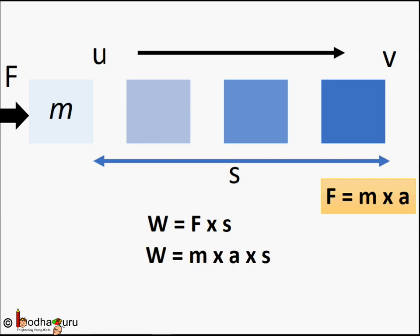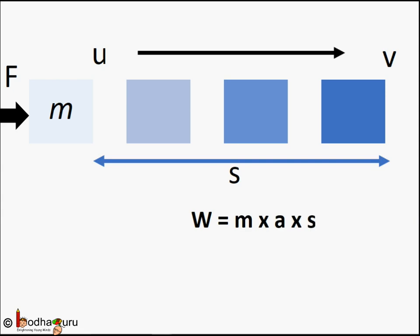So we can rewrite work done as W = m × a × s. Thus, work done equals m multiplied by a multiplied by s.